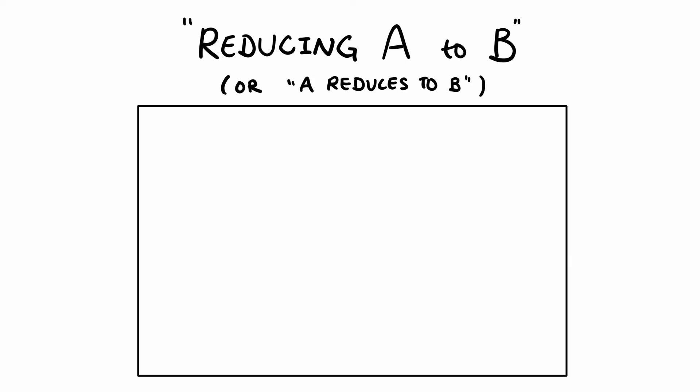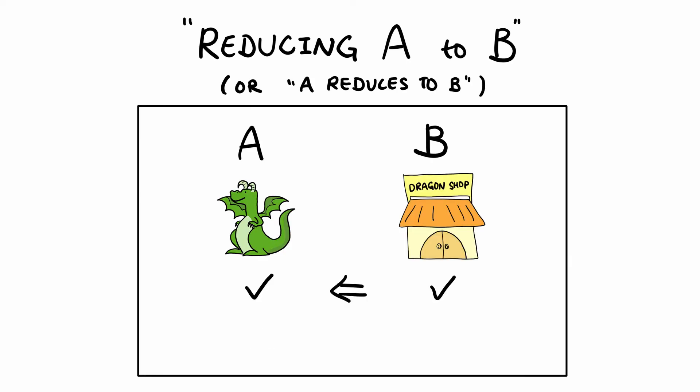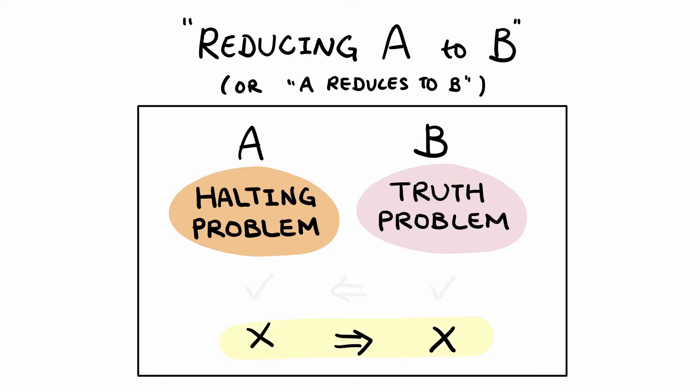In the last video we covered what exactly a reduction is and how we can use reductions to show that a problem is unsolvable. We used the truth problem and the halting problem as examples to demonstrate how reducing the halting problem to the truth problem would show that the truth problem is undecidable. All that was left to cover was to show that we can perform the reduction, which is what we will go through in this video.